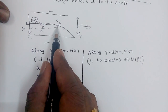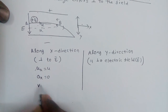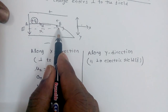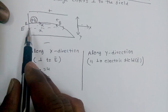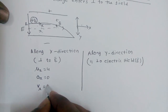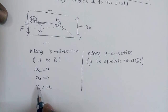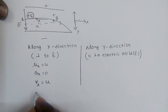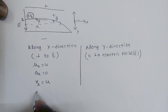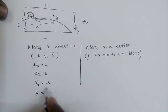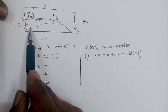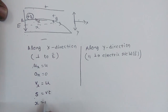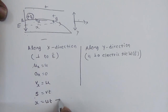At point b, the velocity in the x direction equals u, since acceleration is zero and there is no change in velocity along x. The displacement in t seconds is found using the formula: displacement equals velocity times time. So x equals u times t. This is equation number 1.